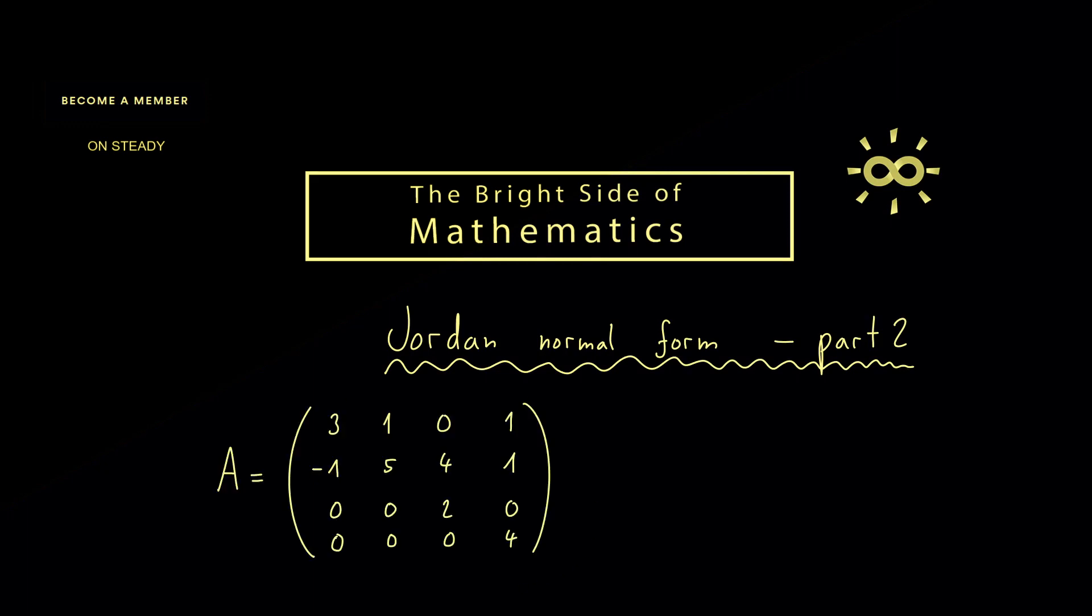Here you see my example for today - it's a 4 times 4 matrix, and the problem is stated this way: find a Jordan normal form for this matrix A. Let me emphasize that your goal is here to find a Jordan normal form. That's just because in the Jordan normal form you have some freedom for the order of the Jordan blocks and the Jordan boxes, as I explained in the last video.